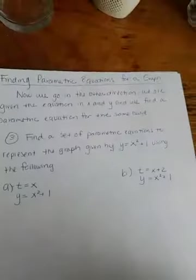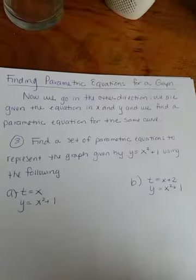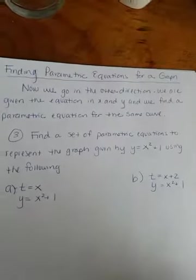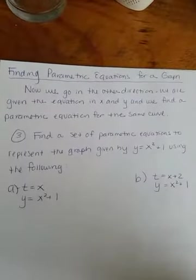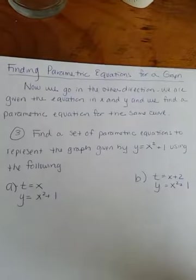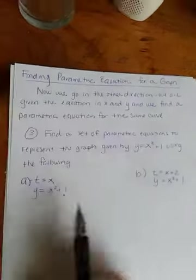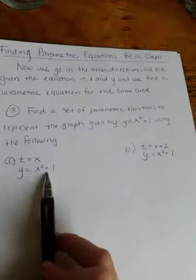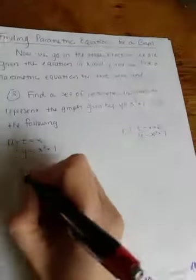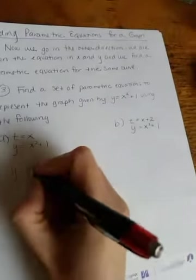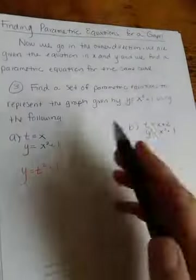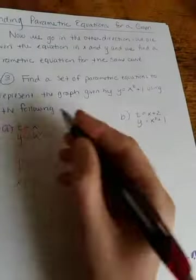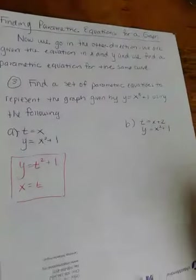And then the last thing I need to talk about is finding parametric equations for a graph. So, now we'll go in the other direction. We are given the equation in x and y, and we find a parametric equation for the same curve. So, now we're going to do the opposite of what we just did. So, these are really two different questions. I guess I lied. But then after this, I'm done. So, find a set of parametric equations to represent the graph given by y equals x squared plus 1 using the following. So, scenario number 1, this is what you're given. You're given t equals x and y equals x squared plus 1, because we were given that. So, there's really not much work to do here. All you're going to do is take your y equals equation, and you're going to substitute t in for x. So, I get y equals t squared plus 1. Again, it says find a set of parametric equations. So, that's the y, and we also have to give the x, and we know that if t equals x, then x equals t. So, there's your answer. Not much to it here.